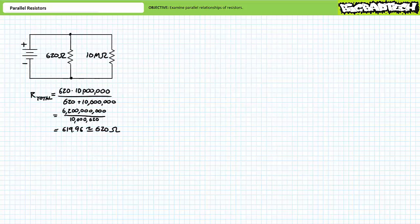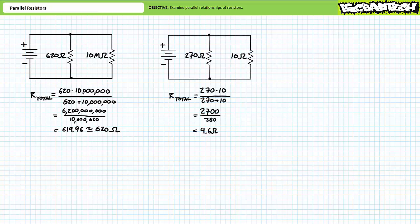For the fifth circuit, the source sees a resistance of approximately 620 ohms. This illustrates that an abnormally large resistor — in this case an obscenely large 10 megaohm resistor in parallel — only slightly influences the value of the other resistor. For the sixth circuit, the source sees roughly 9.6 ohms, illustrating that an abnormally small resistor — here a 10 ohm resistor in parallel — dramatically affects the total resistance. Both examples illustrate the same property: the total resistance of a parallel circuit is always less than the smallest resistor in the relationship.